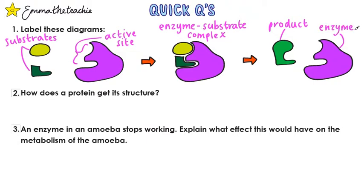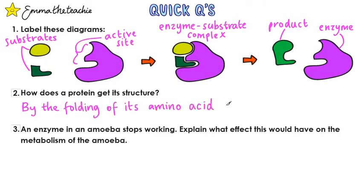And finally we have the enzyme itself, if you haven't labeled that somewhere else already. Question two: how does a protein get its structure? By the folding of its amino acid chains.